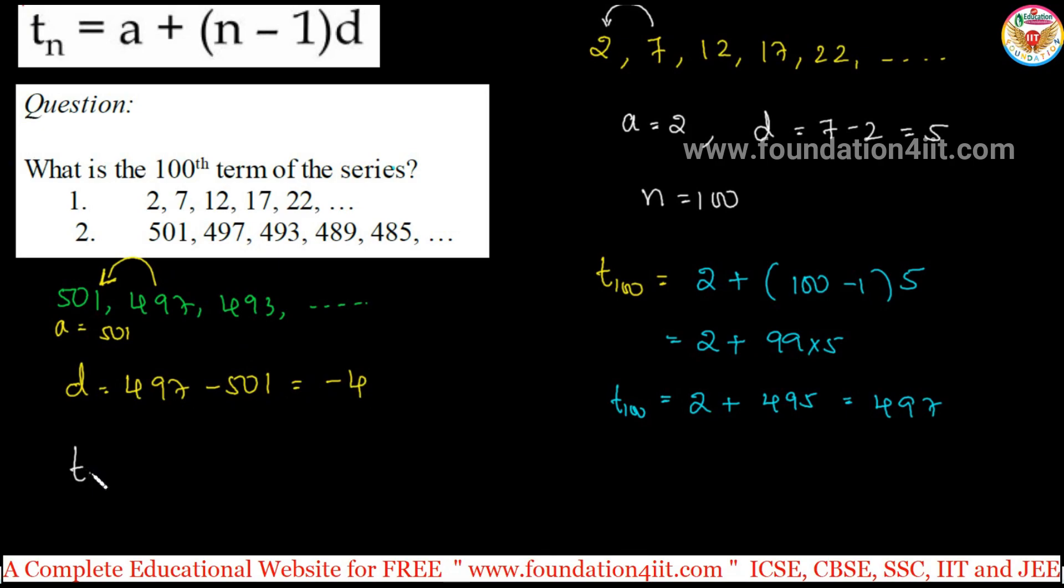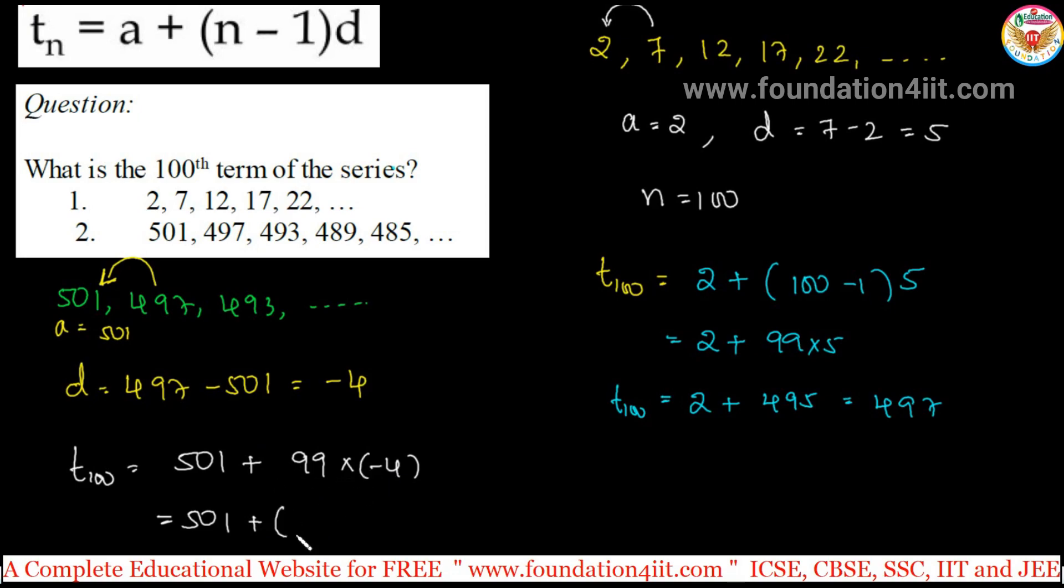And 100th term, so t100 equals a plus n minus 1, that we can write 99, because 100 minus 1 is 99. Difference is minus 4. 501 plus 99 into minus 4. 100 minus 1 is 99. 99 into minus 4, and you can subtract this. This is 4 times. Actually this is plus into minus is minus.